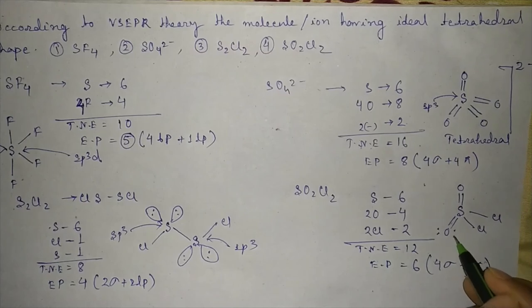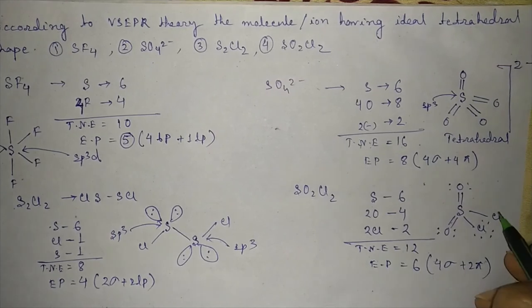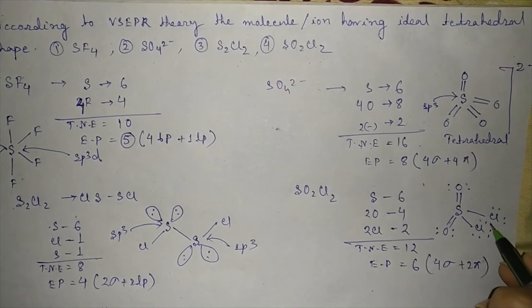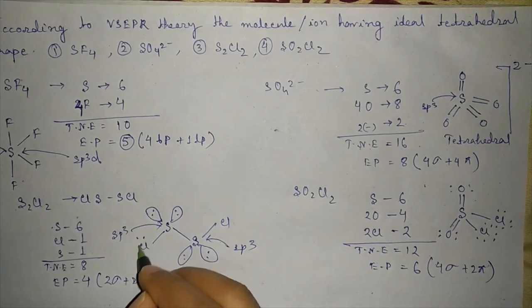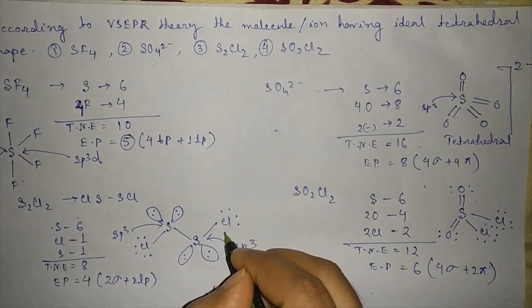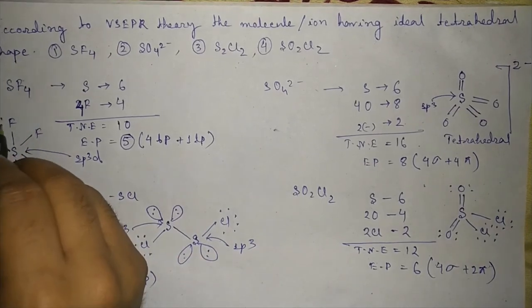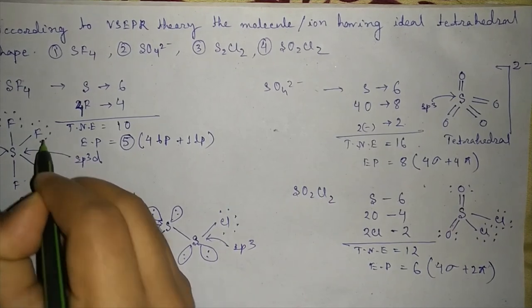If we show the lone pairs, all this will have 3 lone pairs.